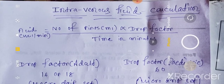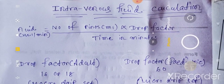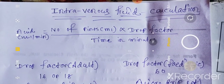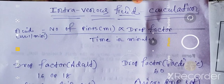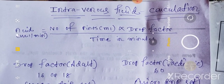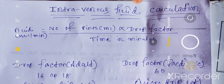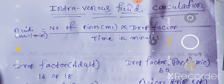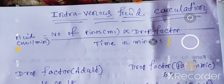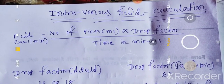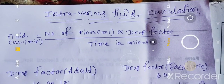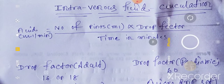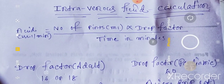Fluid ml per minute is equal to number of pints or ml — 1 pint is equal to 500 ml — into drop factor, divided by time in minutes. Drop factor का मतलब है: 1 ml fluid पे कितने drops बनेंगे — उसी को हम कहते हैं drop factor.